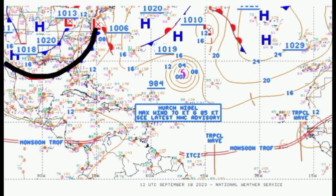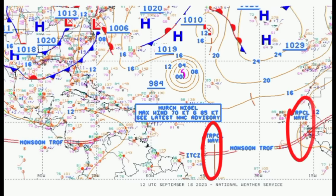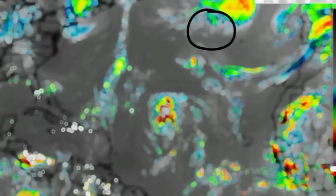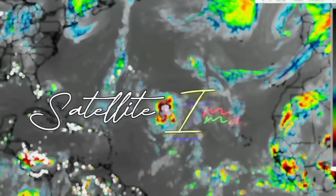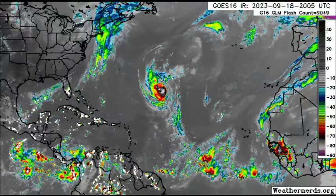There is a frontal system which extends from parts of the U.S. into the Gulf and back up. Along the tail end of it, we could see some leftover activity trying to form into a subtropical cyclone — not a tropical cyclone. We'll go on to that system later in this video. For now, we have the two tropical waves, Nigel, and what is left of Margo.